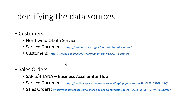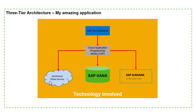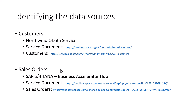The Northwind OData service is a publicly available OData service, and this is where we are getting the customer data from. For the sales orders, we are going to use SAP S/4HANA, but not everybody has access to an SAP S/4HANA system, so we are going to use the Business Accelerator Hub, which is also publicly available. Once everything is working, you can simply replace the URL to point to your SAP S/4HANA system. But for now, we are getting the sales order data from the Business Accelerator Hub.